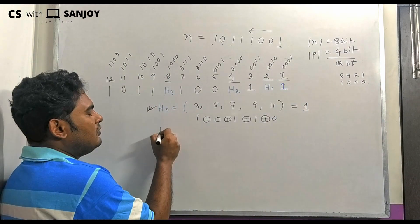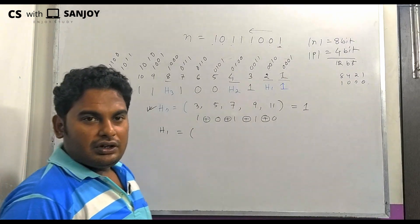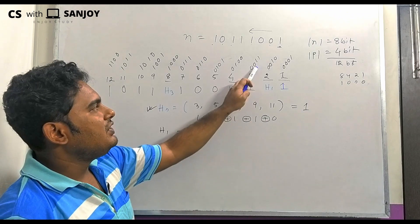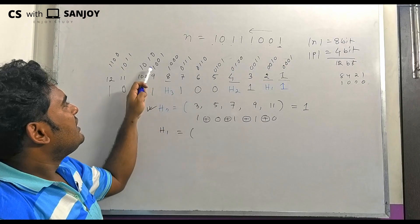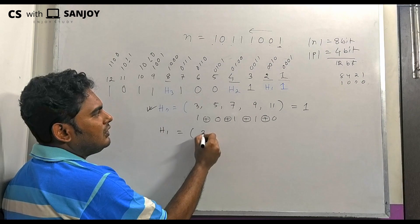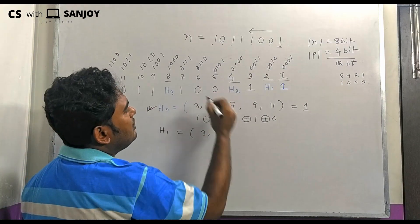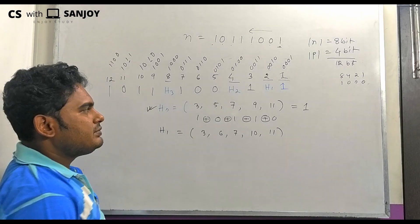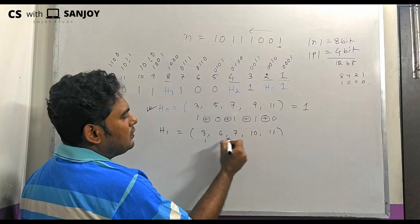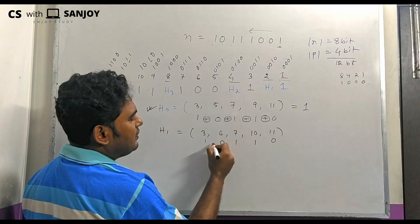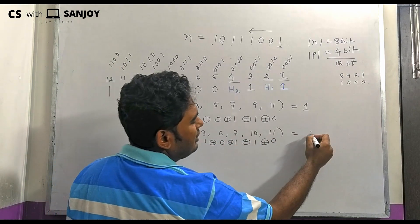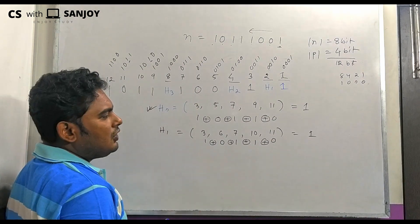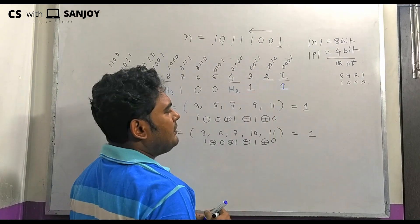Similarly, we calculate the value of H1. H1 is determined by positions whose second bit is 1: positions 2, 3, 6, 7, 10, 11. We find the exclusive OR of the data values at those positions. The result gives us H1 equals 1.